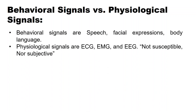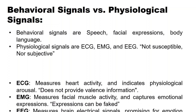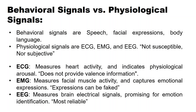Behavioral signals include speech, facial expressions, and body language. Physiological signals include ECG, EMG, and EEG — they are not subjective. ECG may measure heart activity and indicates physiological arousal but does not provide balanced information. EMG measures facial muscle activity and captures emotional expression, but can be faked. EEG measures brain electrical signals and is most promising for emotional identification because it provides both valence and arousal information, which are the most accurate and reliable.